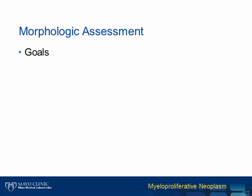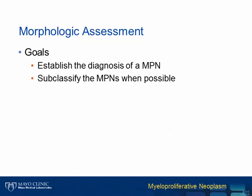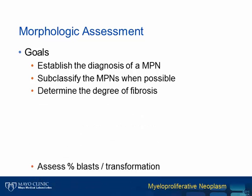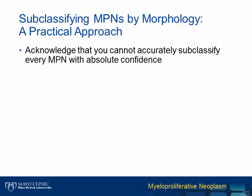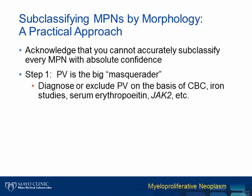The goals for morphologic evaluation in MPN are: number one, to establish the diagnosis of MPN; two, to subclassify the MPN whenever possible; three, to determine the degree of fibrosis; four, to assess percent blast and transformation. When subclassifying MPN by morphology, we need to take a practical approach and acknowledge that we cannot accurately subclassify every single MPN with absolute confidence. So our first step is to rule out or rule in PV. By morphology, PV can be a big masquerader. However, the lab test results might be of help here.